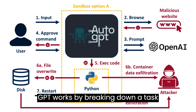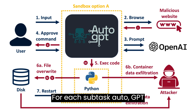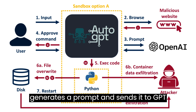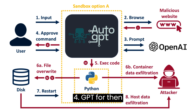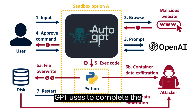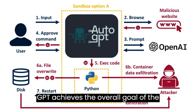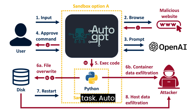Auto-GPT works by breaking down a task into smaller subtasks. For each subtask, Auto-GPT generates a prompt and sends it to GPT-4. GPT-4 then generates a response, which Auto-GPT uses to complete the subtask. Once all of the subtasks have been completed, Auto-GPT achieves the overall goal of the task.